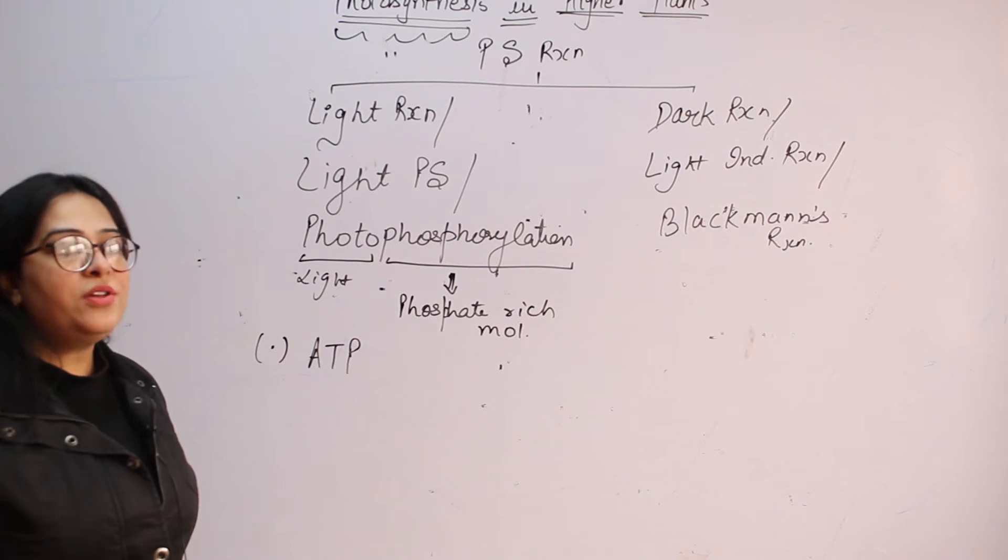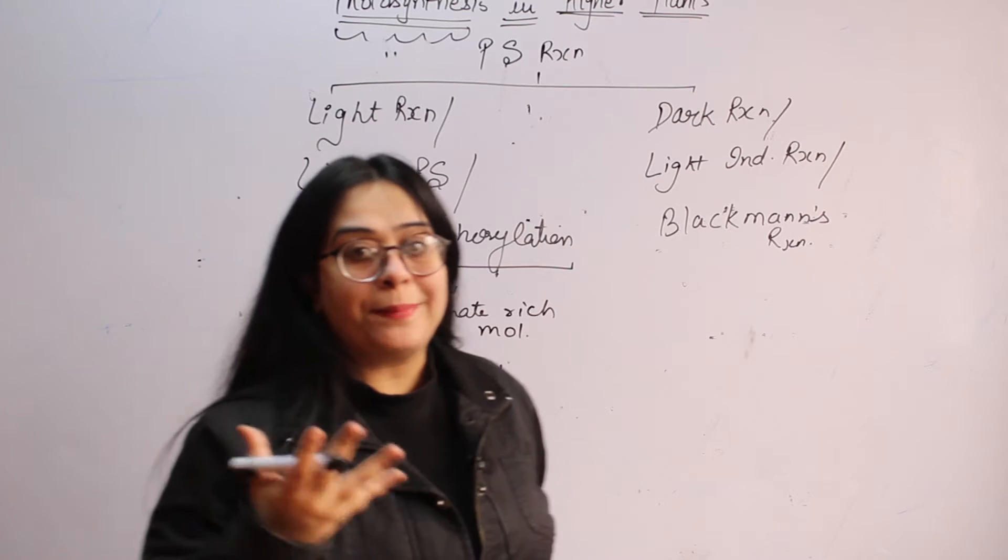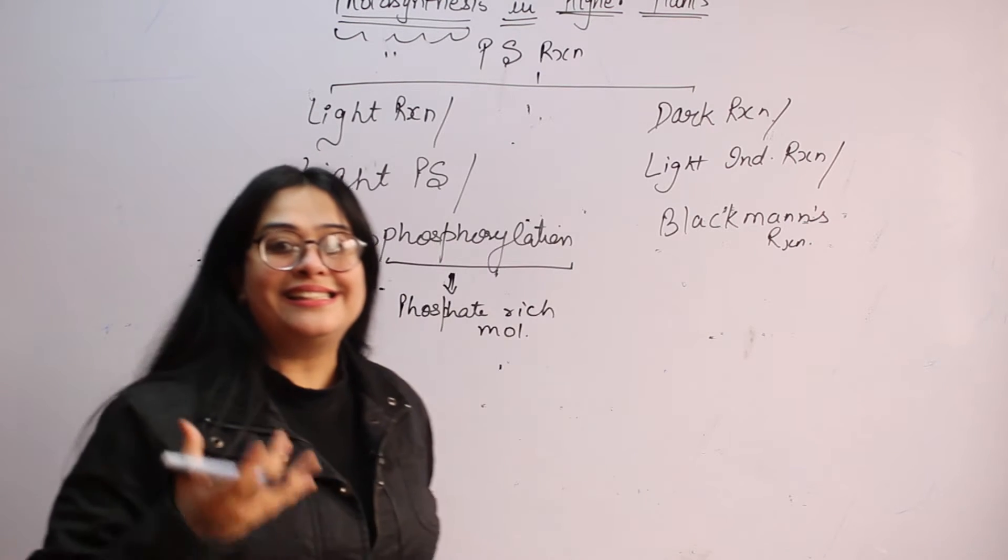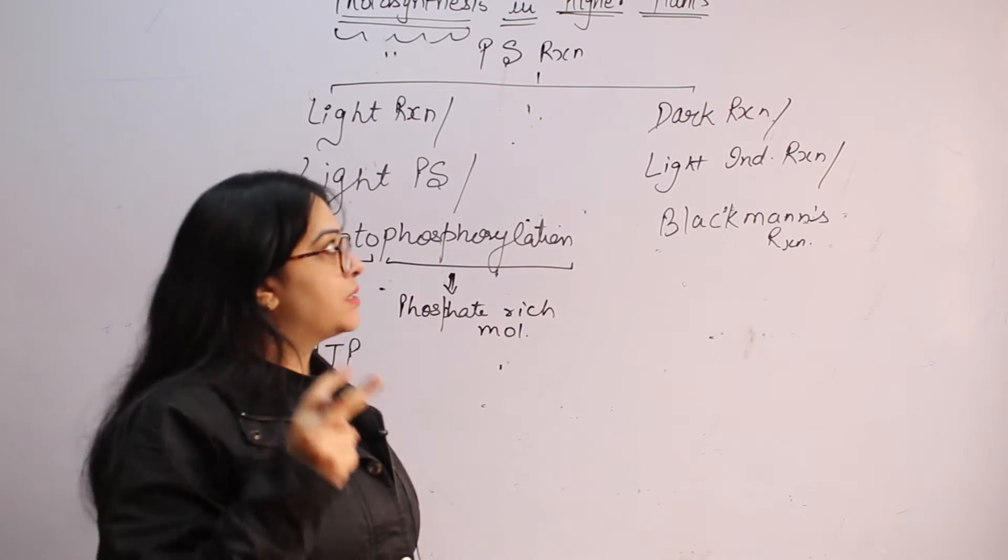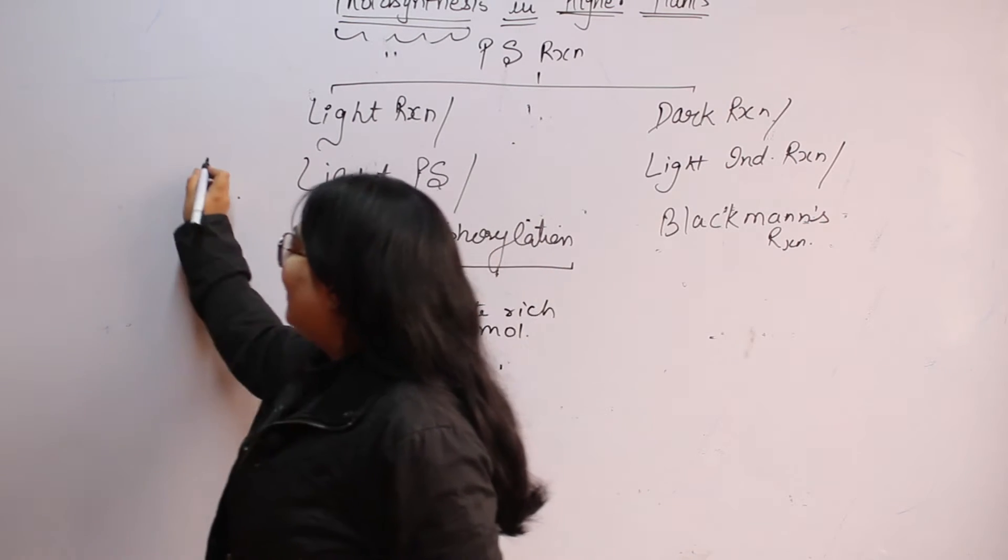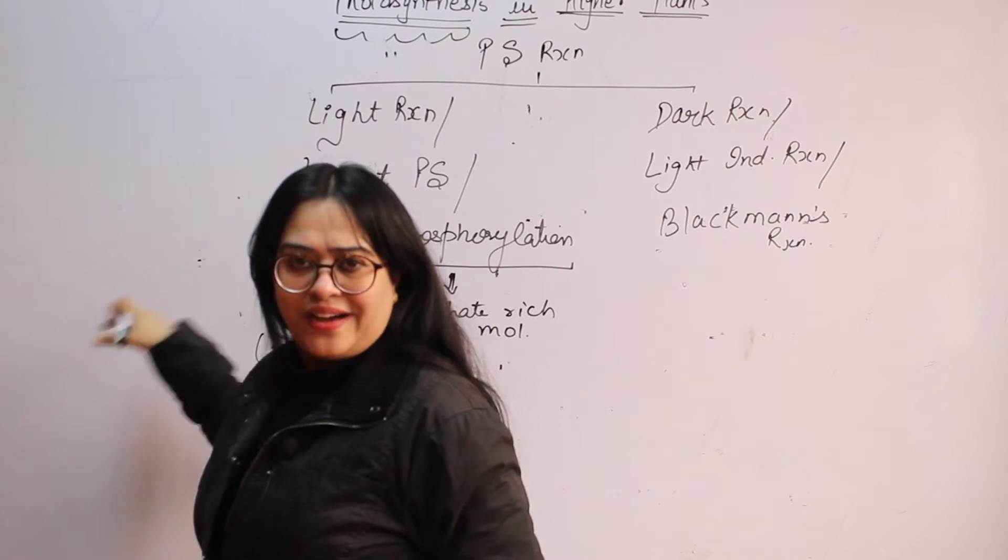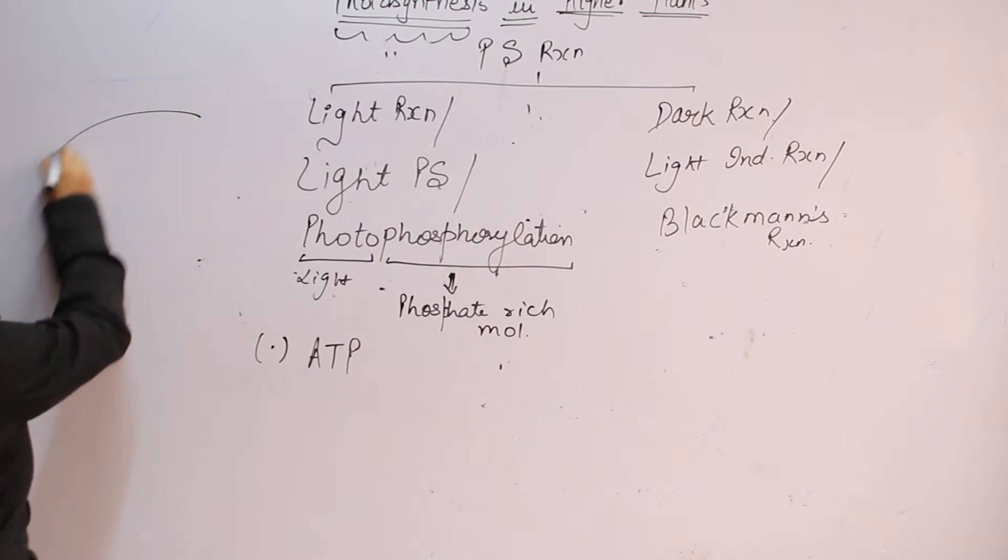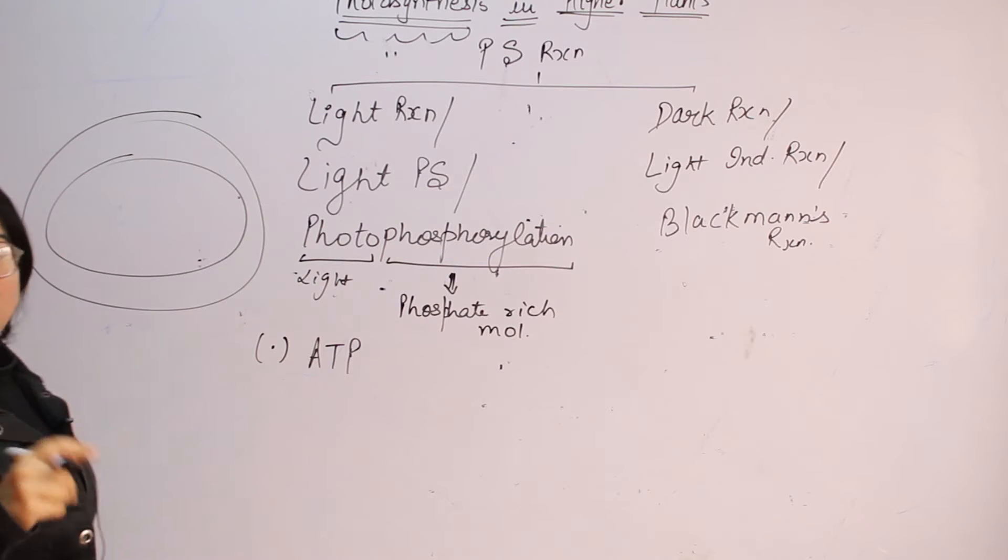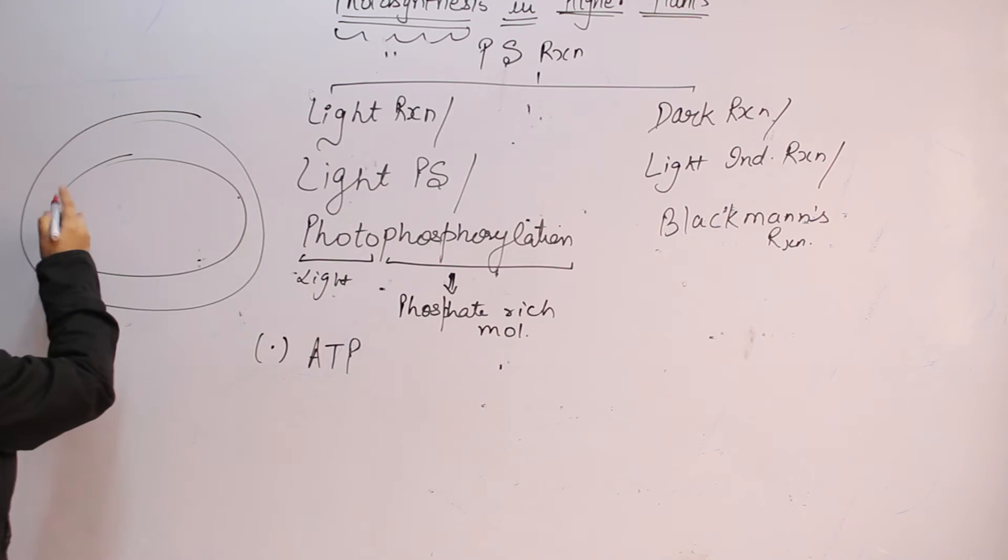So there will be certain photosynthetic pigments present in the thylakoid of chloroplast. See this complete reaction is going to happen in chloroplast only. If I make the structure of chloroplast in a very brief, I am going to give a very brief idea about chloroplast here.